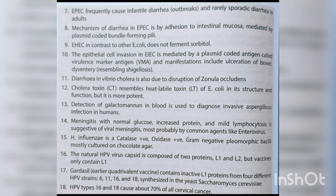Haemophilus influenzae is catalase-positive, oxidase-positive, gram-negative, pleomorphic bacilli, mostly cultured on chocolate agar. The natural HPV virus capsid is composed of two proteins, L1 and L2, but the vaccine only contains L1.